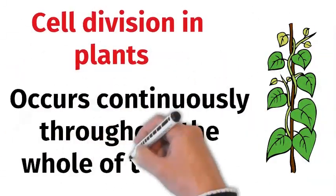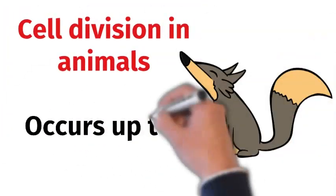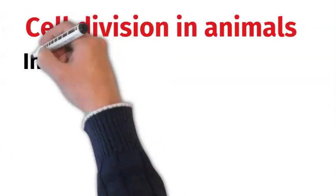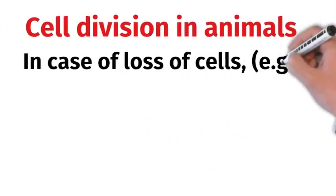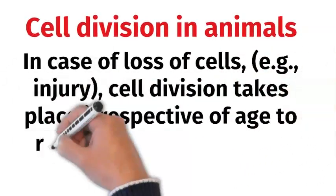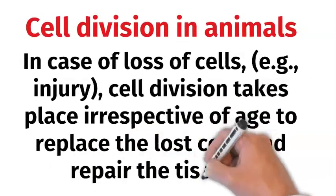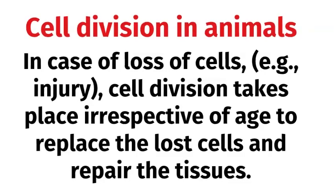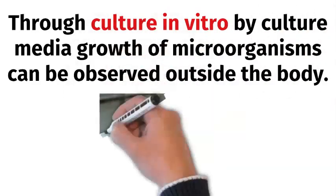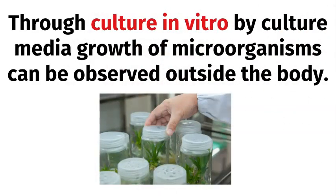Both unicellular and multicellular organisms grow by cell division. Cell division in plants occurs continuously throughout their whole life, but cell division in animals occurs up to a certain age limit. However, in case of loss of cells by injury, cell division takes place in dead tissue irrespective of age to replace lost cells and repair tissues. Growth of microorganisms can also be observed outside the body through in vitro culture media.